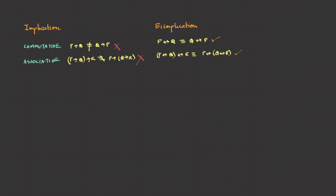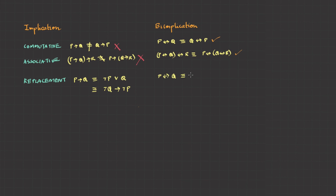Most of the time whenever we come across implication or biconditional, we just take a replacement using AND and OR. So learning the replacement formula is very important. For implication: P implies Q can be written as negation P OR Q — we derived this in the last video. It is also equivalent to negation Q implies negation P. For biconditional: P biconditional Q is equivalent to negation P biconditional negation Q, which is also equivalent to (P implies Q) AND (Q implies P), which is the same as (negation P AND negation Q) OR (P AND Q).